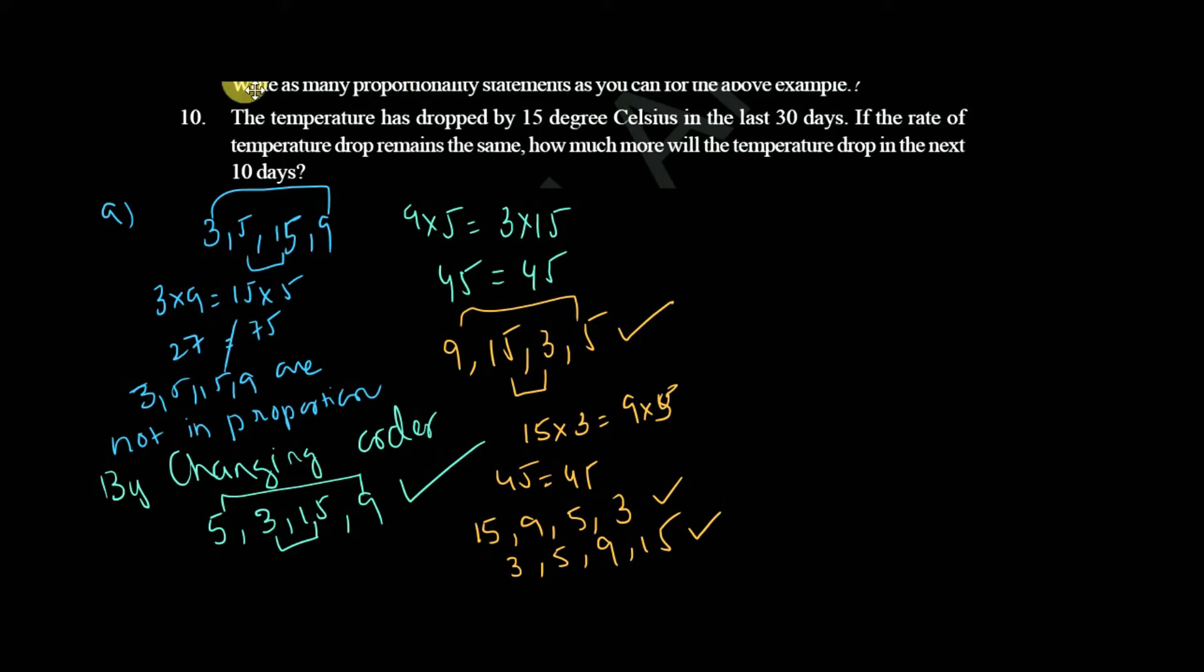Then the temperature has dropped by 15 degrees Celsius. 15 degrees Celsius is dropped in 30 days. If the rate of temperature drop remains the same, so rate of temperature dropping is same, so they are in proportion. Then how much more will temperature drop? What is the temperature in degrees Celsius for the next 10 days?